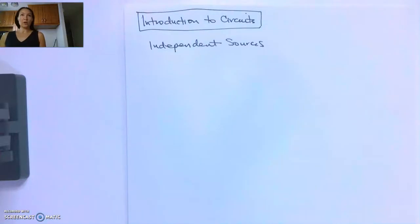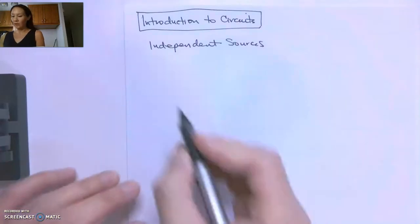In order for current to flow in a circuit we need a power source. There are a few different types of sources and we've seen a couple already, but first let's talk about independent sources. They're called independent because the power they supply does not depend on any other voltage or current elsewhere in the circuit.